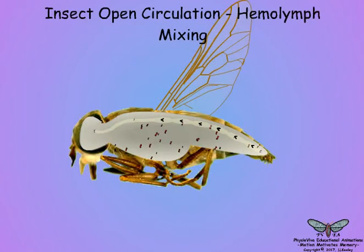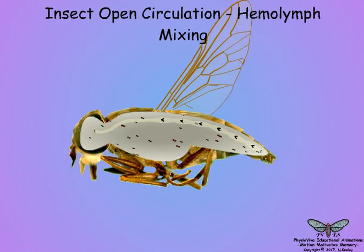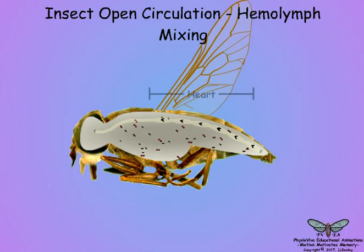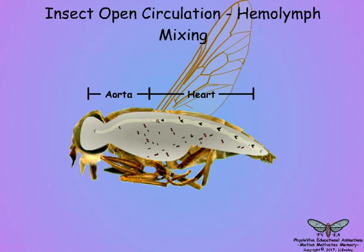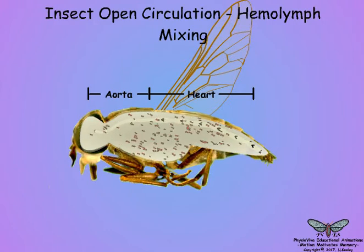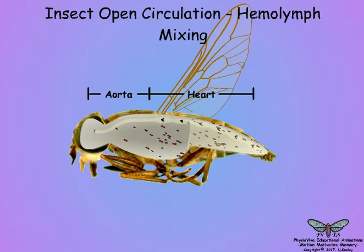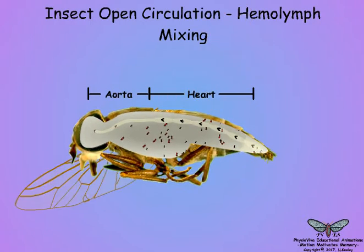By comparison, insects with an open circulatory system must rely on blood mixing to deliver mobile energy sources to the muscles. Using a fly circulatory system as our model, we see the dorsal heart and aorta moving hemolymph from the posterior end of the insect to the head, where it begins to mix with the rest of the hemolymph in the hemocele, and flow back toward the posterior due to heartbeat, ventilatory expansion compression, and body movements.